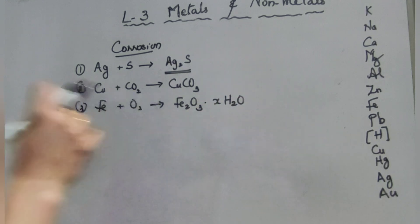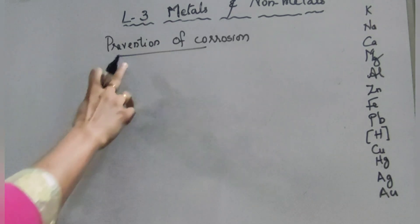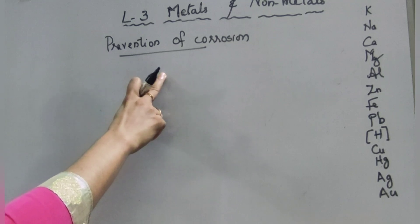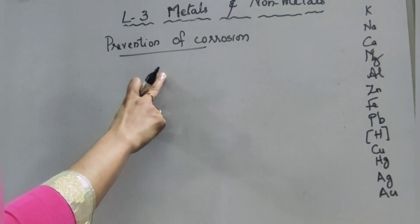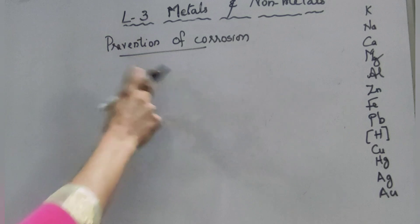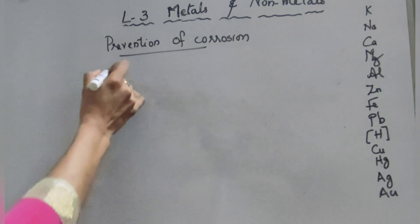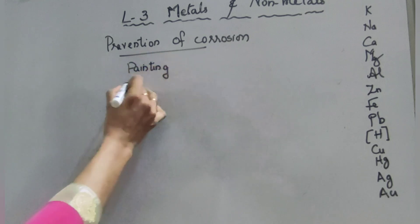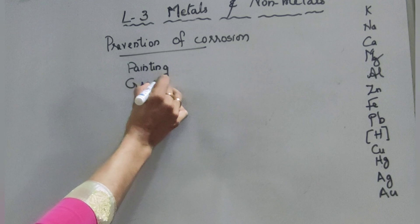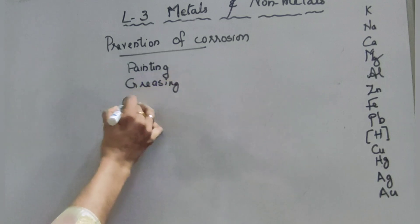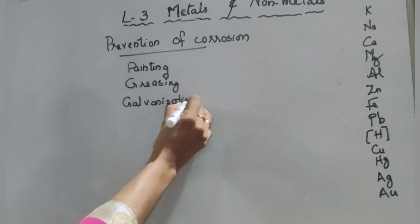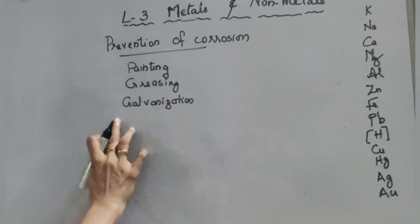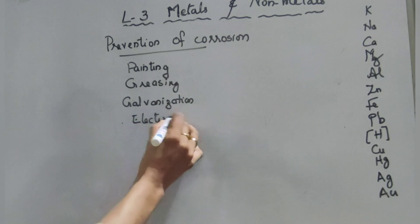Prevention of corrosion: rust is prevented by preventing the reaction between atmospheric moisture and iron articles. This can be done by painting, greasing, galvanization, electroplating, and alloying.